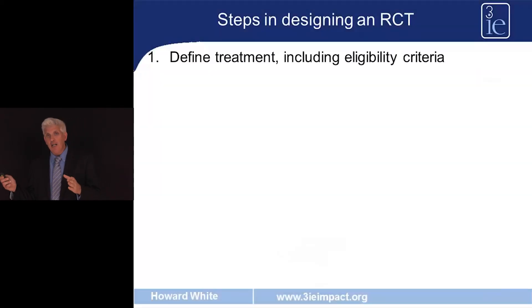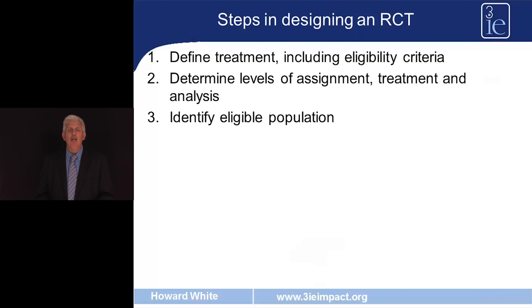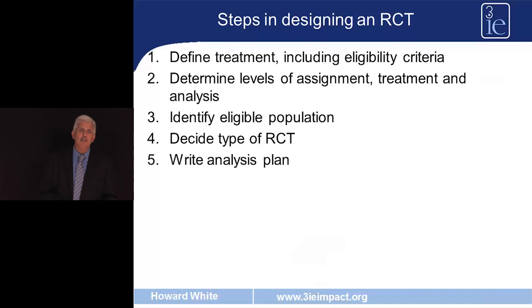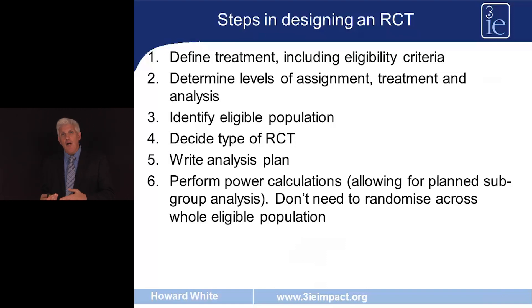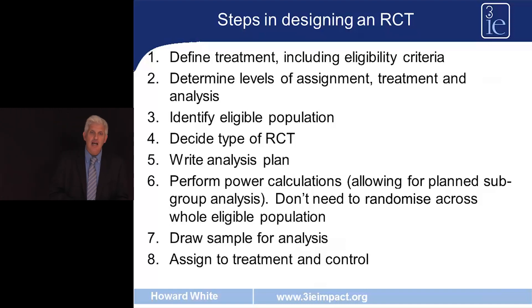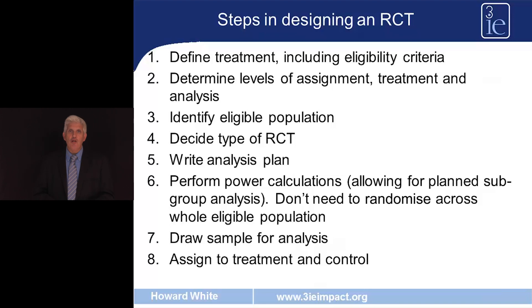What are the steps involved in designing a randomised controlled trial? First, you define the treatment, including the eligibility criteria. Then you determine the levels of assignment, treatment, and analysis. You identify the eligible population, decide what type of RCT to use, write the analysis plan, work out the required sample sizes and power calculations — not forgetting any subgroup analysis — draw a sample for the analysis, and then assign that sample to treatment and control groups.